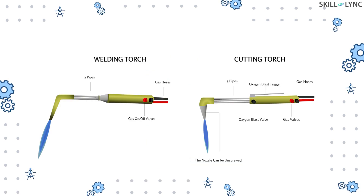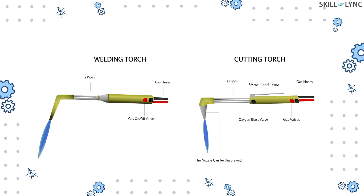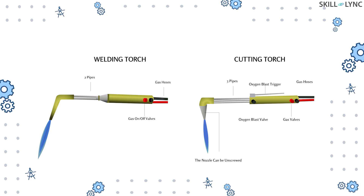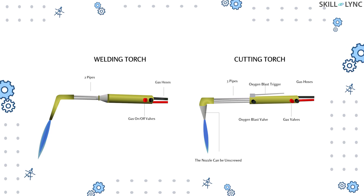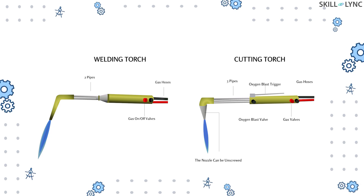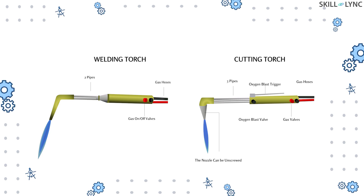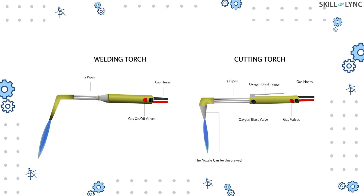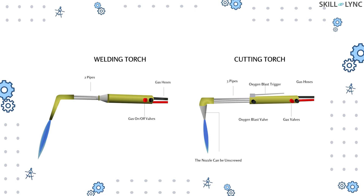Another very interesting aspect of gas welding is that with very minor changes, the process can be converted into gas cutting. In fact, the construction of a gas welding torch is very similar to a gas cutting torch — the only difference being the extra pipe for oxygen blasting. We'll discuss how gas cutting works in another video.